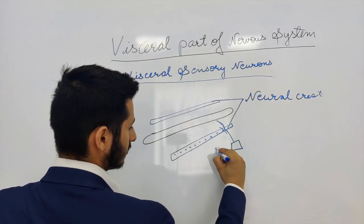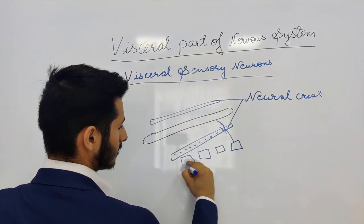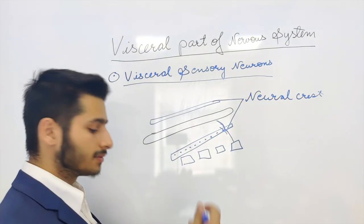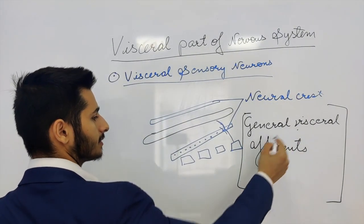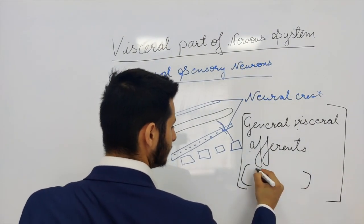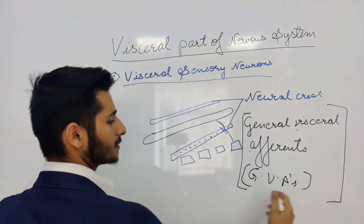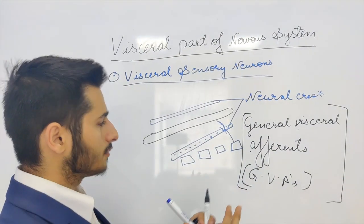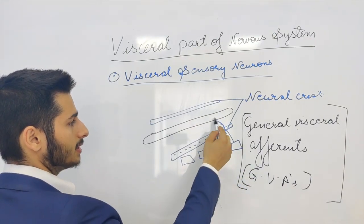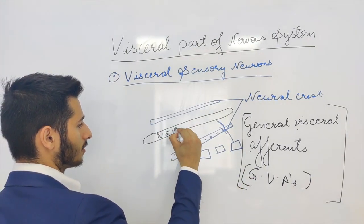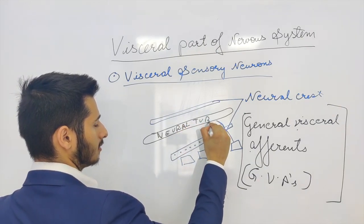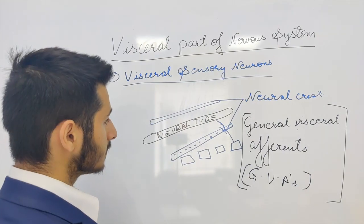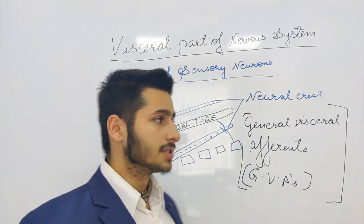On the lateral side of the neural crest we have dermatomes, so laterally the processes are sent out to the associated regions of the skin and muscles, whereas medially they are sent out to the neural tube. These visceral sensory neurons are also known as general visceral afferents, or GVAs. They arise from the cells of the neural crest and send out their processes medially to the neural tube and laterally.